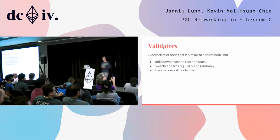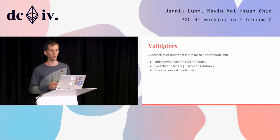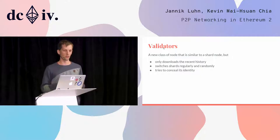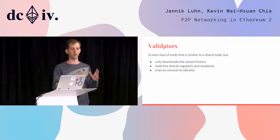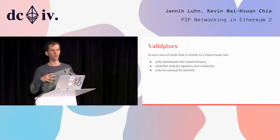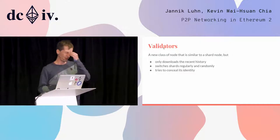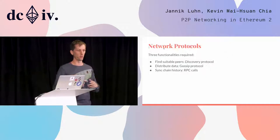Another thing that's different from the existing Ethereum network is that we have a new class of nodes called validators. They are similar to normal nodes in that they are interested in data belonging to a certain shard, but they only care about the recent history — they don't download the whole chain back to genesis. They also switch regularly between shards because they get randomly assigned to a new shard to validate. A third difference is that they don't want the rest of the network to know they are validators, because they stake ether and want extra protection to avoid being attacked.